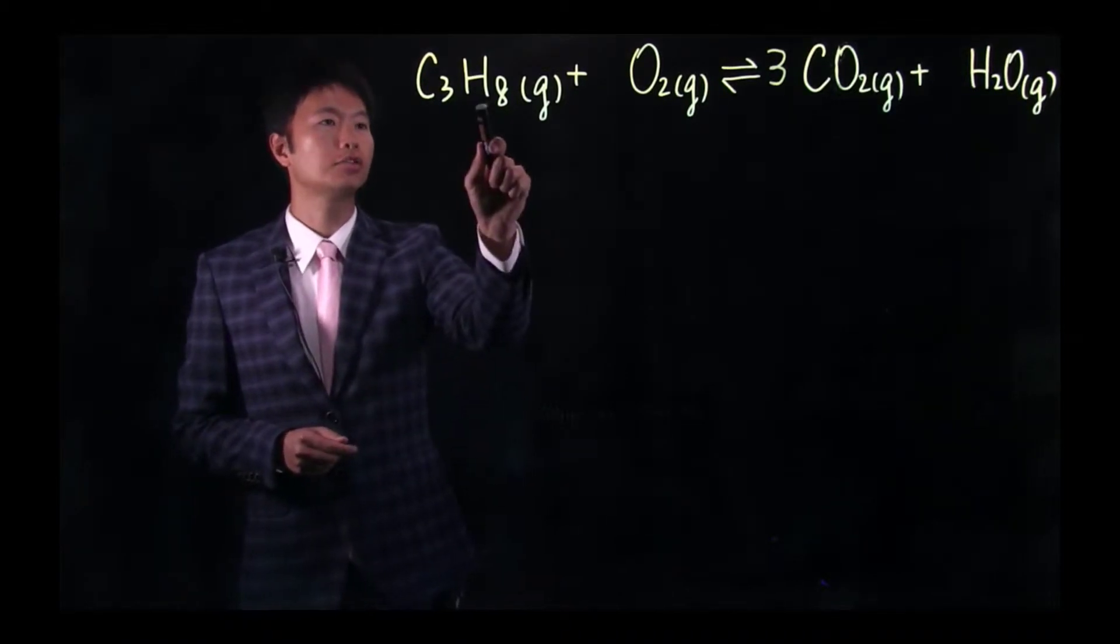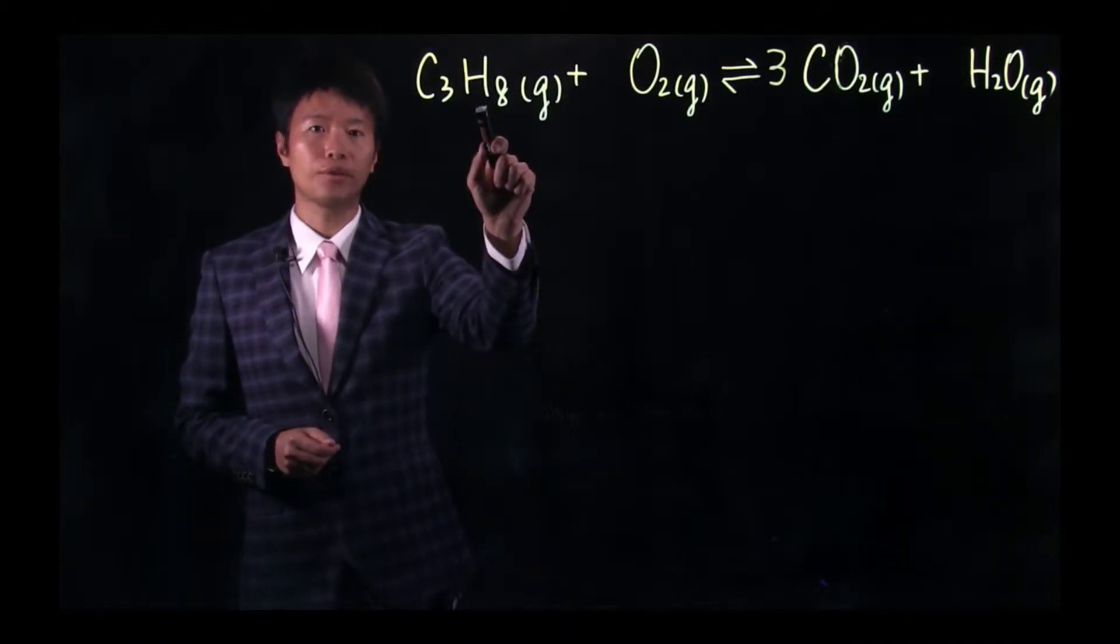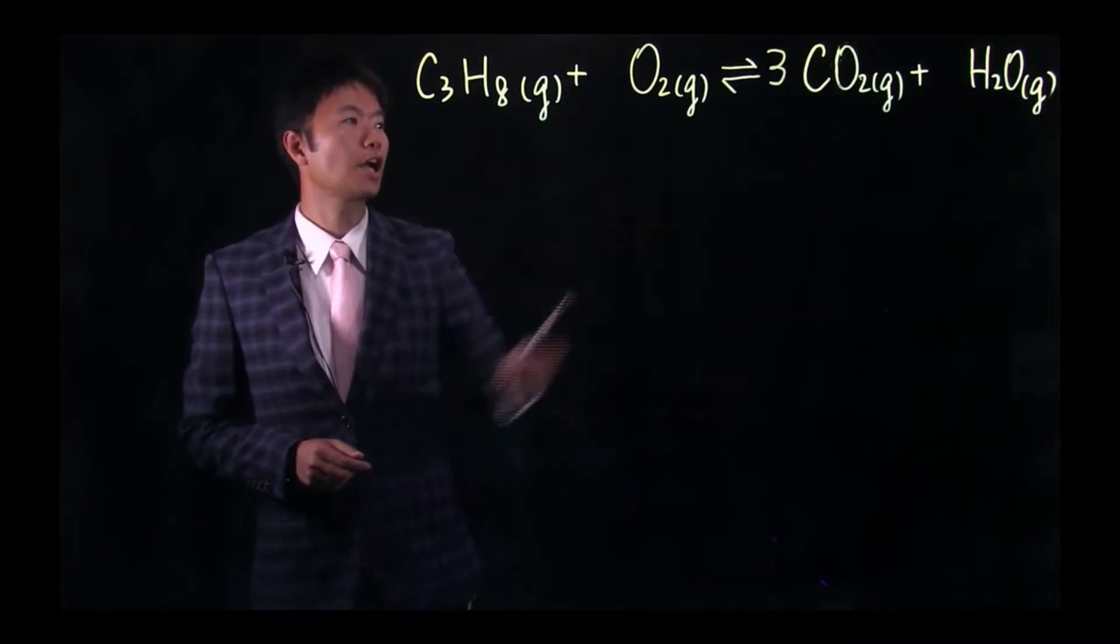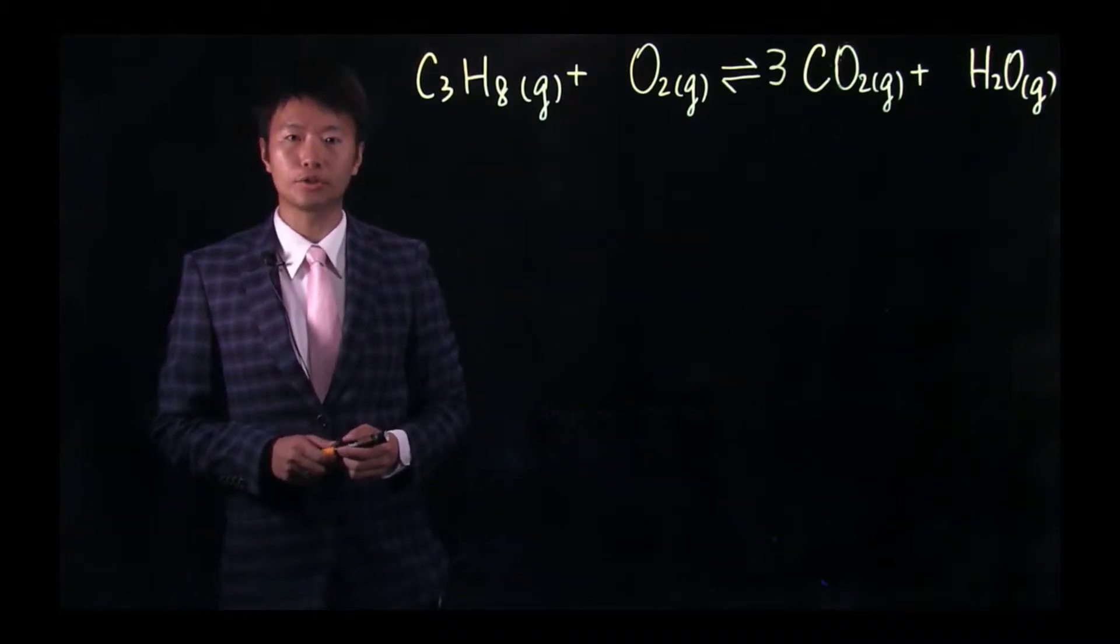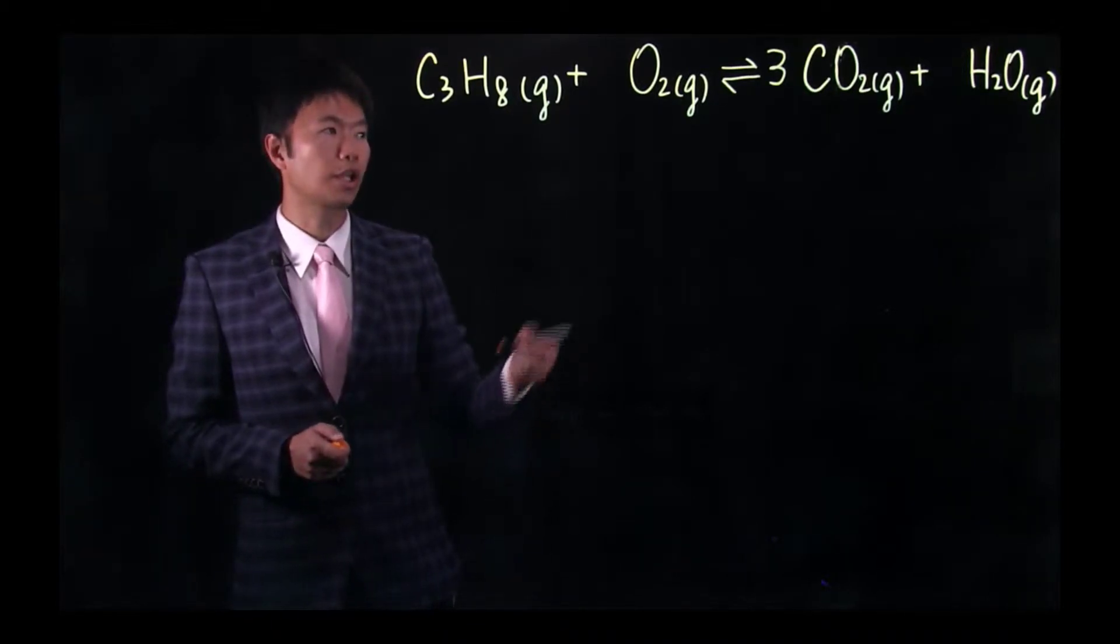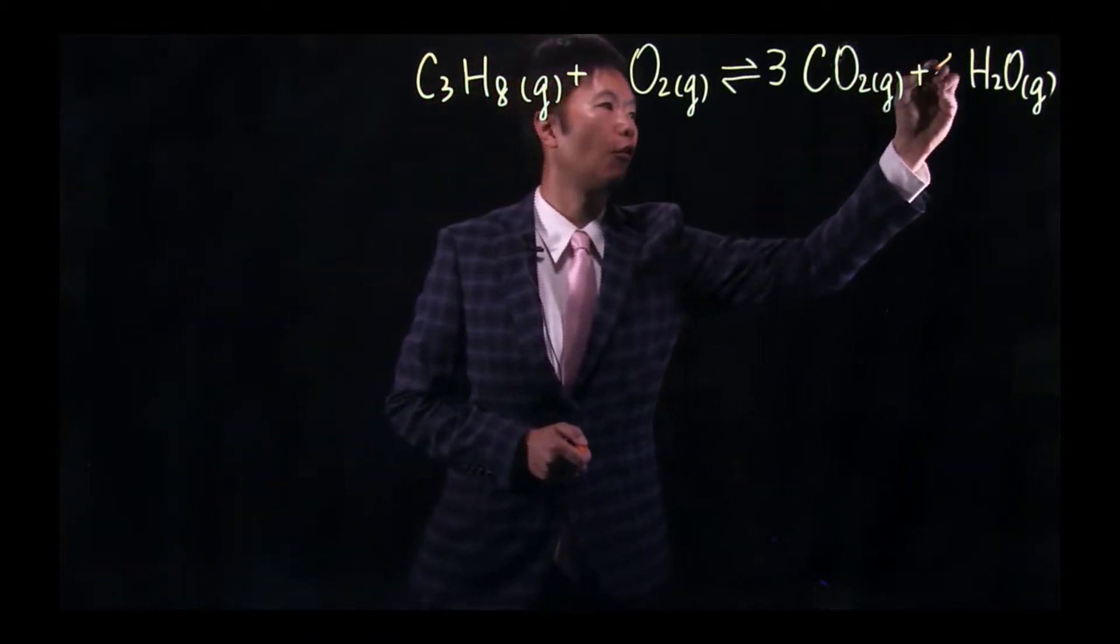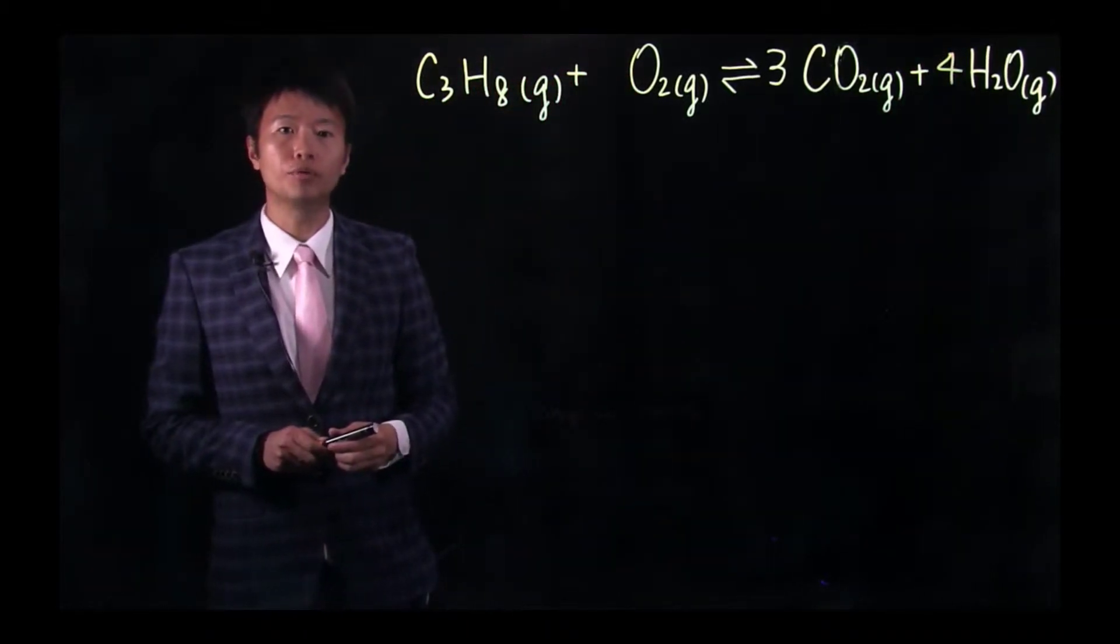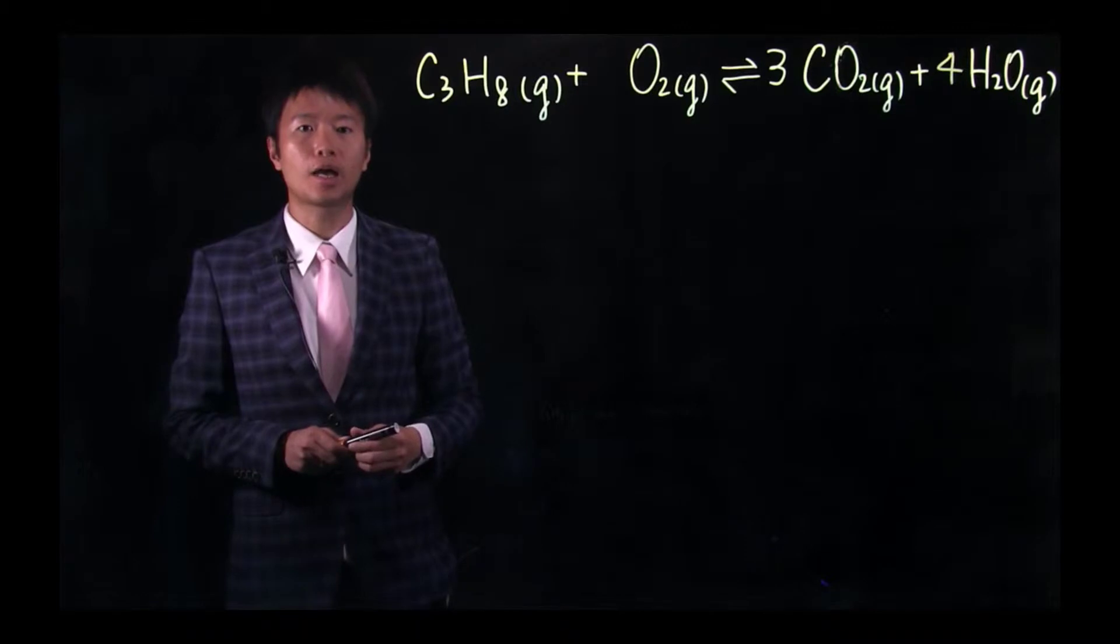Then we take a look at hydrogen. On the left hand side we have eight hydrogen atoms. And on the product side we only have two hydrogen atoms. So in order to get eight hydrogen atoms, we need to put a four right here. So now on both sides of the reaction we have eight hydrogen atoms.